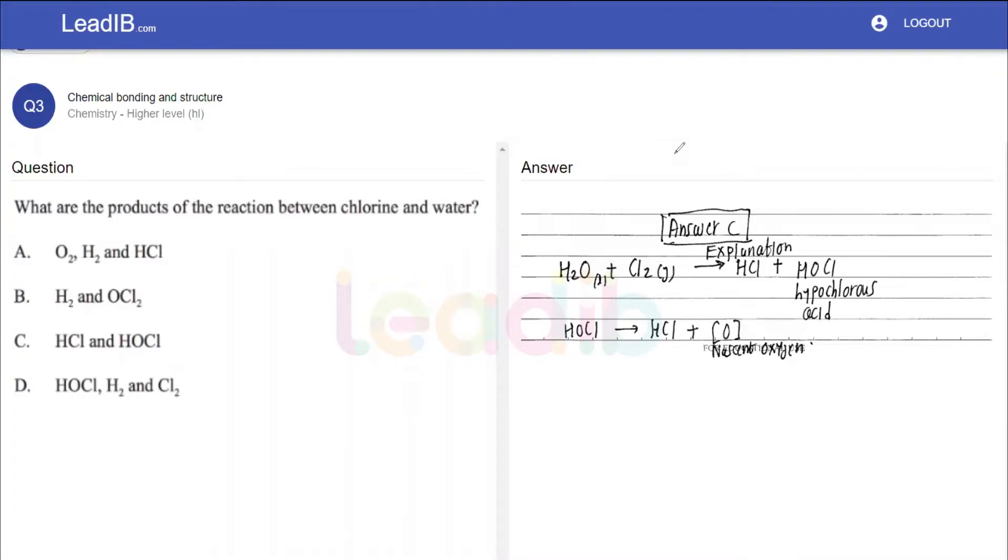Hi, we are looking at question number 3 of chemical bonding and structure of IB Diploma Chemistry HL. The link for this question has been provided in the description, so please do visit.